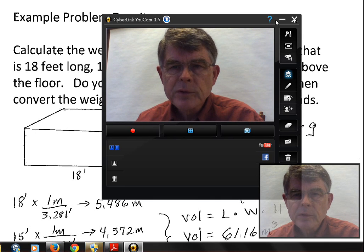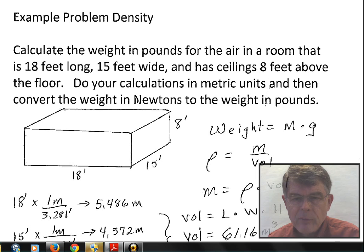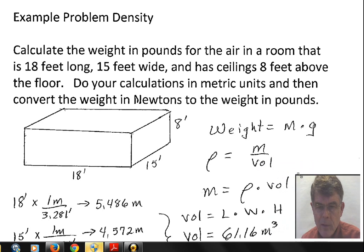This video will give you some practice using the formula for density. The density is mass divided by volume. This particular calculation we want to find out what is the weight in pounds for the air in a room 18 feet long, 15 feet wide, and the ceiling is 8 feet above the floor. We'll convert the weight in newtons to a weight in pounds at the end.